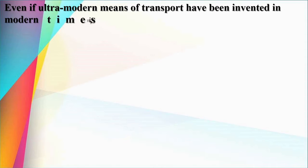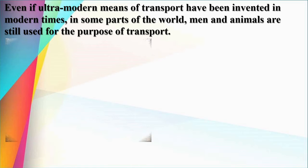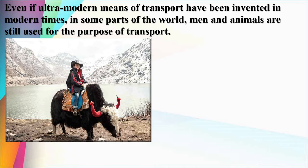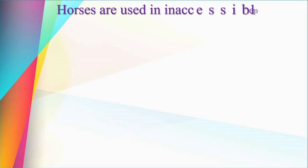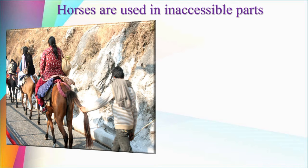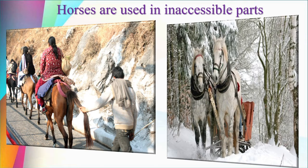Even if ultra-modern means of transport have been invented in modern times, in some parts of the world men and animals are still used for transport. This is a yak (Y-A-K). In some mountainous areas, the yak can easily move. Horses are used in inaccessible parts where roads are very narrow and steep — it is very difficult for us to move, so man uses horses to go up mountainous areas.